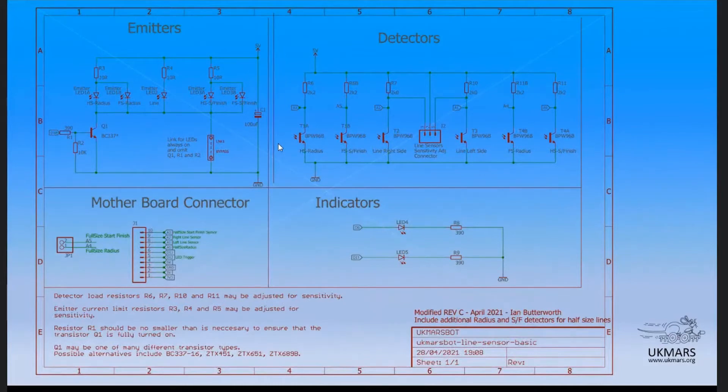Basically you have got to do something about those markers but fortunately the line sensor board doesn't use all the available IO on UK Micromouse. We do actually have two spare analog lines. This is a modified schematic from the UK Micromouse line board. In the emitter section in the top left hand corner here add two more emitters. You've got one set of emitters for the radius marker and the start finish marker for full size and a separate pair of emitters for the half size markers.